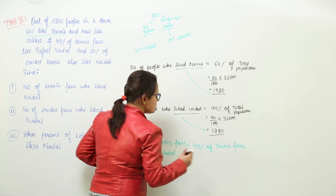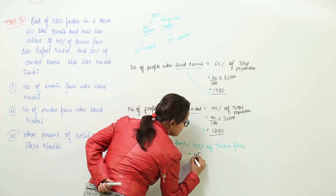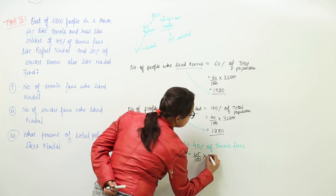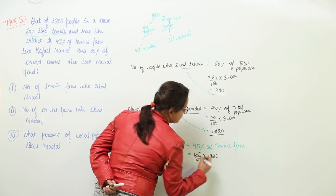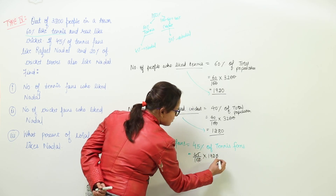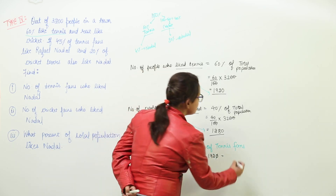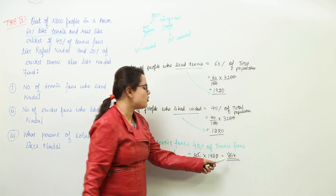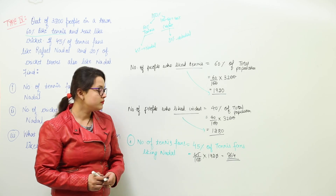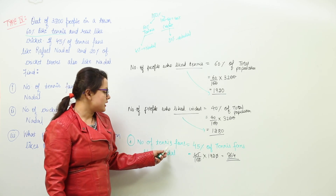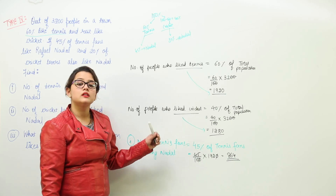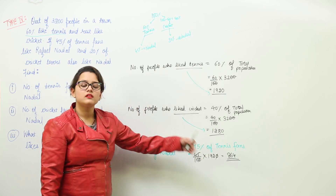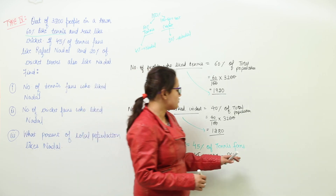We put the values: 45 upon 100 into 1920. When you cancel this out and solve it, you get 864. So there are 864 people out of the town who like tennis and also like Nadal. These are the tennis lovers who are liking Nadal. That was the first part.